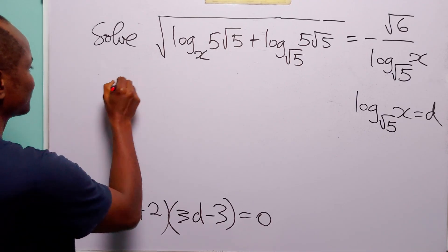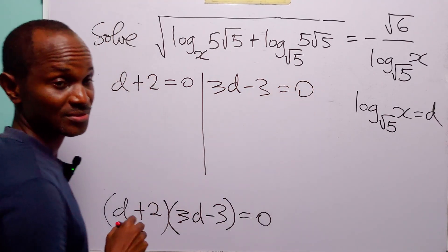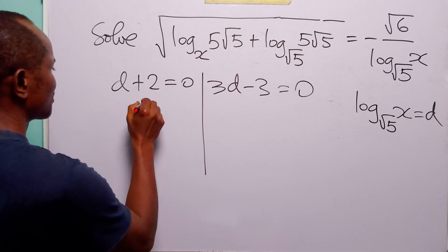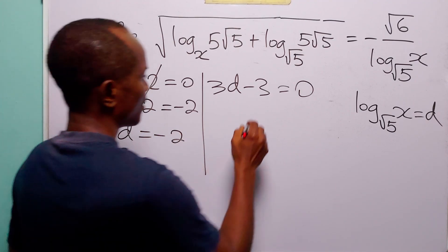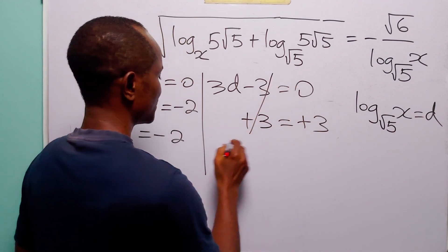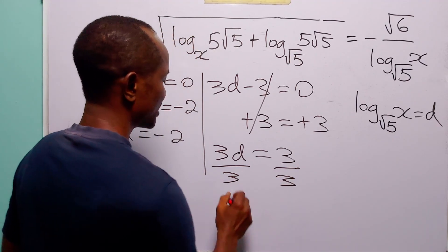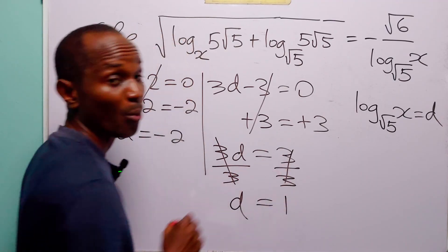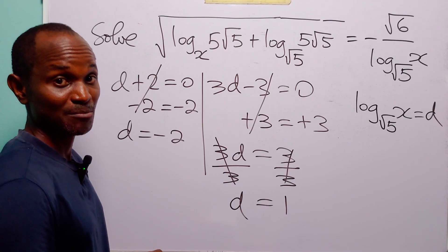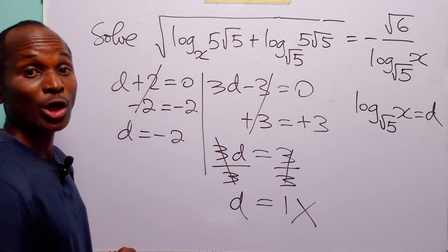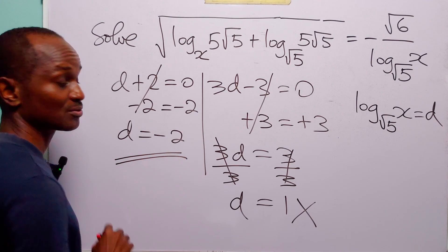From here, we have that either d plus 2 is equal to 0, or 3d minus 3 is equal to 0. Subtracting 2 gives d equals minus 2. Adding 3 and dividing by 3 gives d equals 1. So we have found two values of d: minus 2 and 1. But remember that d must be negative, so d equals 1 is unacceptable. The value of d that satisfies our equation is d equal to minus 2.